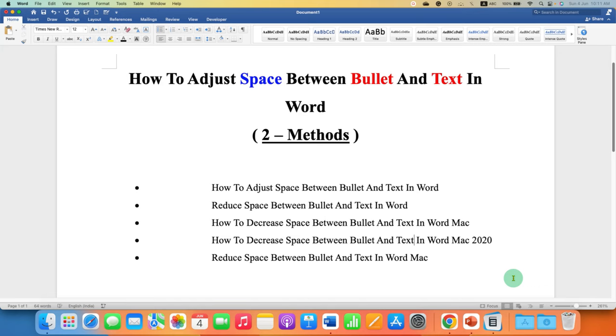In this video, you will see how to adjust space between bullet and text in Word document. As you can see, I have added a lot of space between bullet point and the text. There are two quick easy methods.